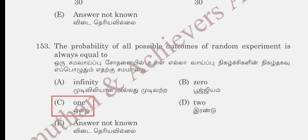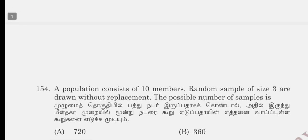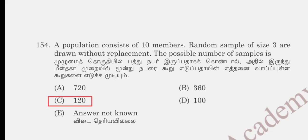The probability of all possible outcomes of a random experiment is always equal to: option A infinity, option B 0, option C 1, option D 2. The correct answer is 1, option C. Next, question 154: a population consists of 10 members and a random sample of 3 is drawn without replacement. The possible number of samples is 120, option C.